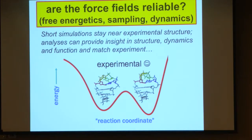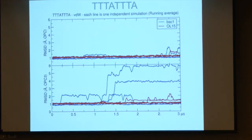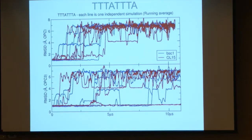One persistent issue: are the force fields reliable? If we run short simulations we tend to stay near the experimental structure and reproduce experimental properties well. But throughout my career from the early 90s through today, anytime we get a bigger machine and run longer we suddenly find new structures that are lower in free energy than the experimental structures and never return to experiment. With the mini dumbbells, if I run shorter simulations around three microseconds they're stable, but if I run longer essentially all simulations fall apart and never come back to experiment.